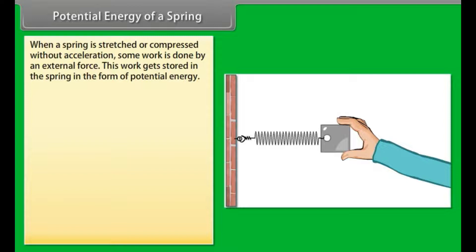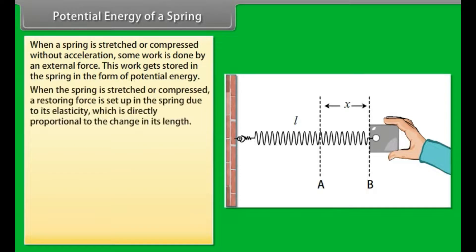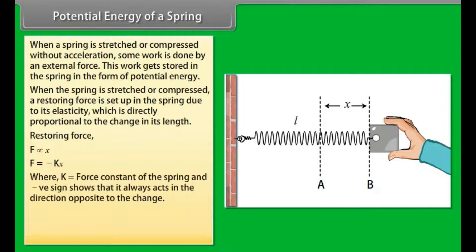Potential energy of a spring. When a spring is stretched or compressed without acceleration, some work is done by an external force. This work gets stored in the spring in the form of potential energy. When the spring is stretched or compressed, a restoring force is set up in the spring due to its elasticity, which is directly proportional to the change in its length. Restoring force is given by F ∝ x, F = -kx, where k = force constant of the spring. And negative sign shows that it always acts in the direction opposite to the change.